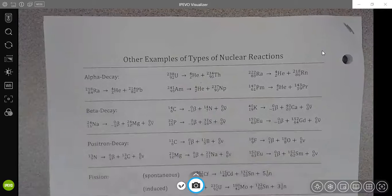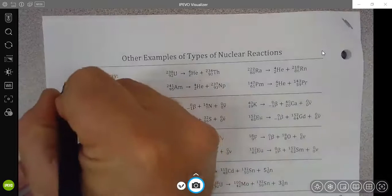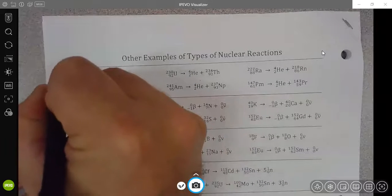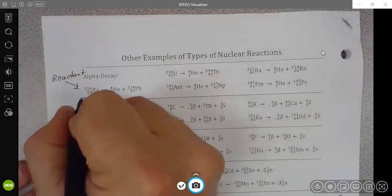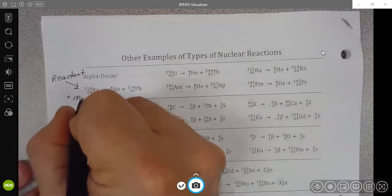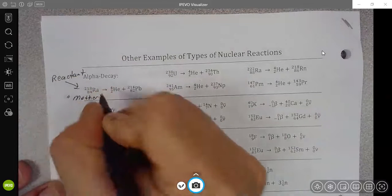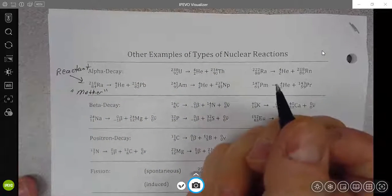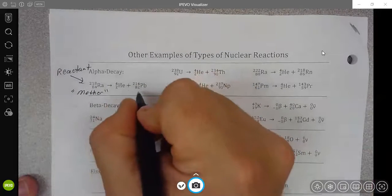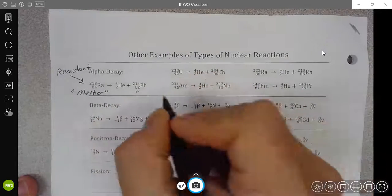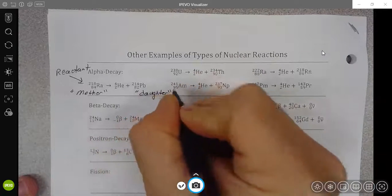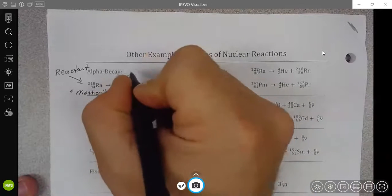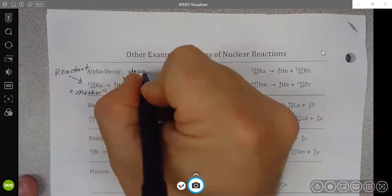In alpha decay, just like all of these other decays, we can typically call these reactants not only reactants, but we will also generally call them the mother nuclide or the mother atom. We can call the big thing they normally change into the daughter, and we will call the other piece the decay particle.